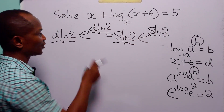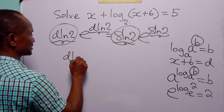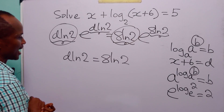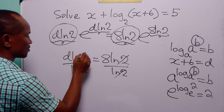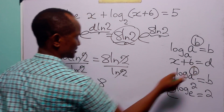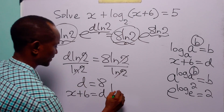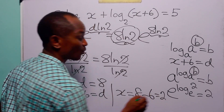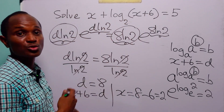We can see that both sides are now in the form u times e to the power u. Applying the Lambert W function to both sides of this equation, we get d times ln 2 is equal to 8 times ln 2. Dividing both sides by ln 2, we have d equals 8. Since x plus 6 equals d, we have x equals 8 minus 6, which equals 2.